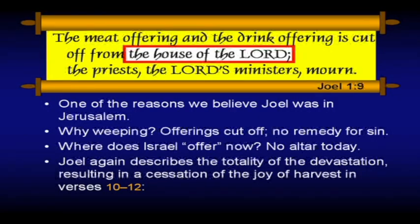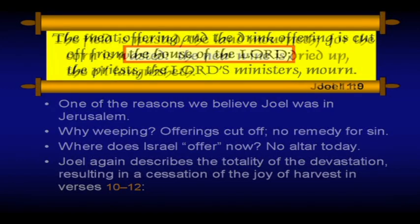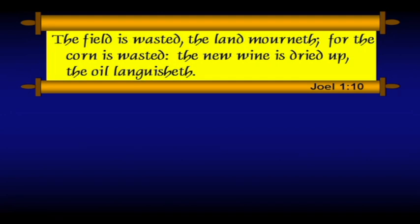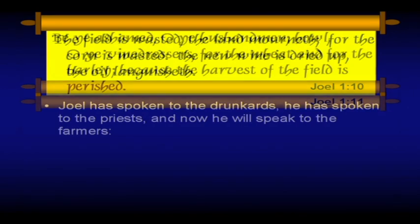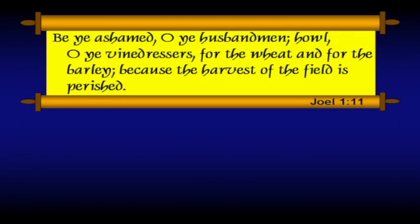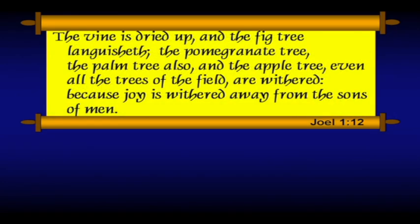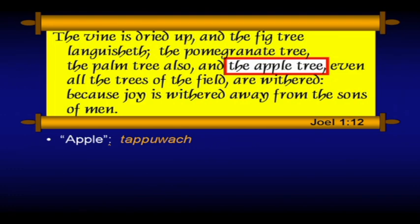Joel again describes the totality of the devastation — there's no joy of harvest. Verses 10 through 12: 'The field is wasted; the land mourneth; the corn is wasted; the new wine is dried up; the oil languisheth.' He's already spoken to the drunkards and the priests; now he's going to start speaking to the farmers. 'Be ye ashamed, O ye husbandmen. Howl, O ye vinedressers, for the wheat and for the barley, because the harvest of the field is perished. The vine is dried up; the fig tree languisheth; the pomegranate tree, the palm tree also, and the apple tree — even all the trees of the field are withered, because joy is withered away from the sons of men.'